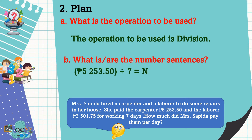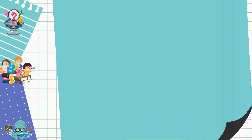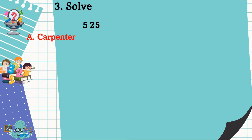The number sentences are: 5,253.50 pesos divided by 7 equals n — this is for the carpenter. And 3,501.75 pesos divided by 7 equals n — this is for the laborer. We already have a plan, so let's solve the problem.